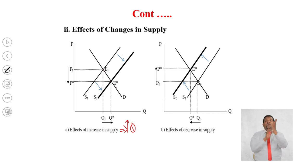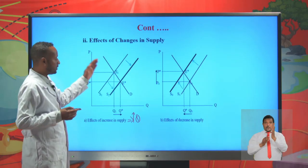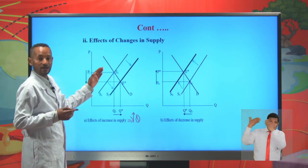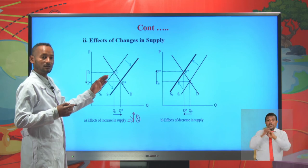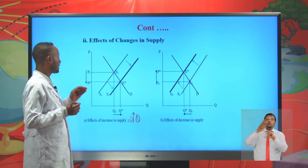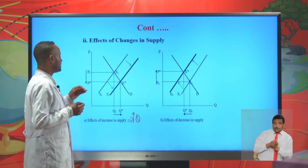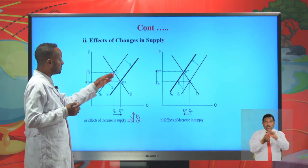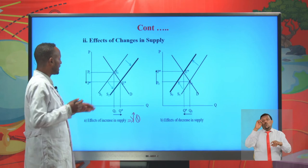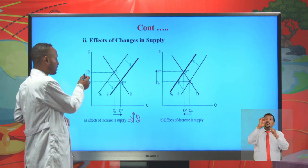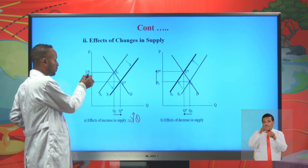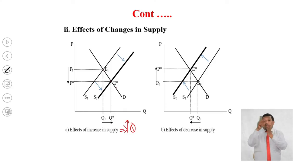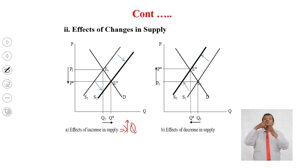As a result of an increase in supply, we shift the supply curve to the right. The equilibrium point shifts from E1 to E*, and the equilibrium price shifts from P1 to P*. So the equilibrium price will decline.